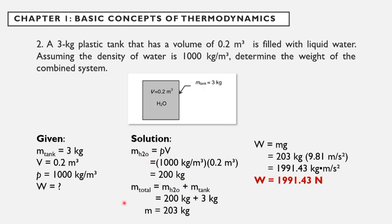So to get the total mass, we have to add the mass of the water and the mass of the tank. So we have 200 kg plus 3 kg, and the total mass is equal to 203 kg.